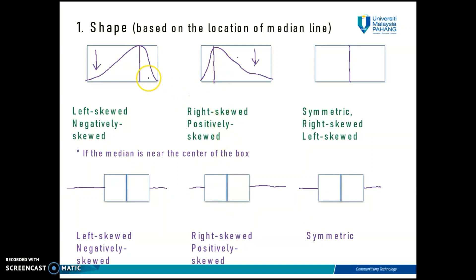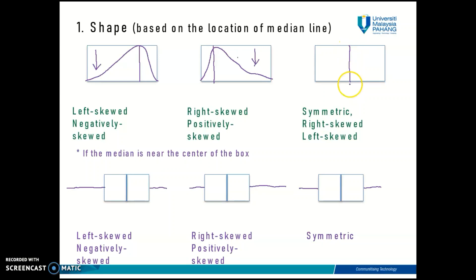To summarize: if your median line is closer to the right side of the box, you have a left skewed distribution. If the median line is closer to the left side of the box, your data has a right skewed distribution. If the median line is positioned right at the center of the box, you may have a symmetric, right skewed, or left skewed distribution, so you need to look at the length of the whiskers to determine the shape.